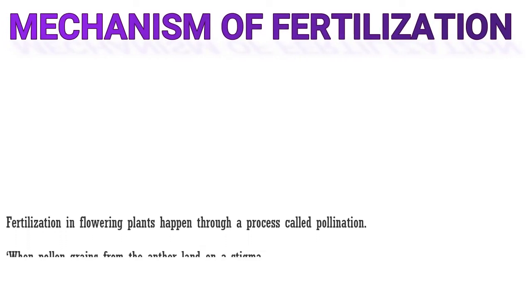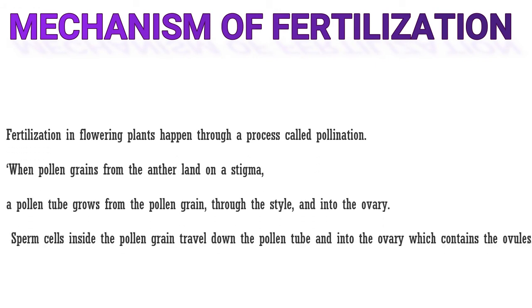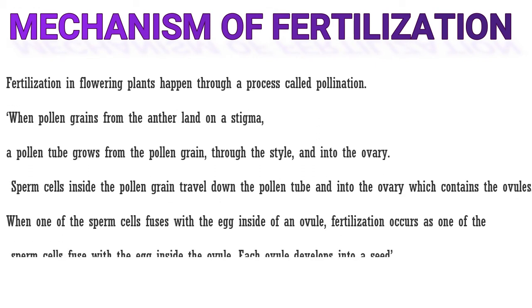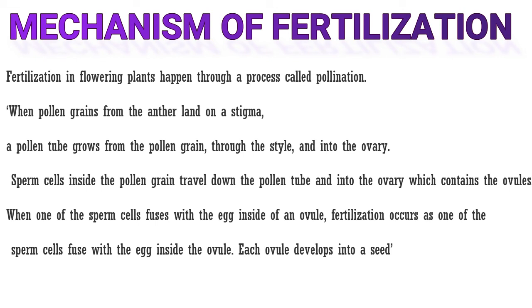Then after pollination, hibiscus flower undergoes fertilization. Let's look at the mechanism of fertilization on flowering plants. Fertilization in flowering plants happens through a process called pollination. When pollen grains from the anther land on a stigma, a pollen tube grows from the pollen grain through the style and into the ovary.